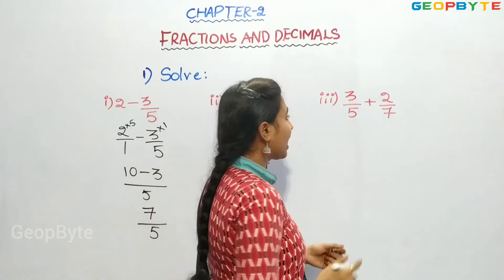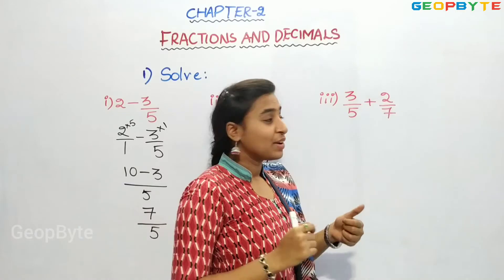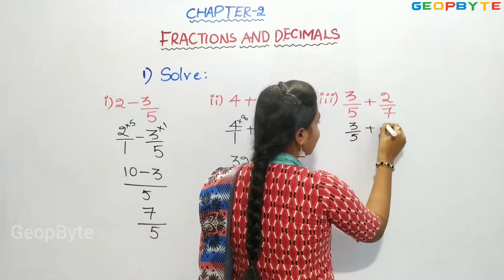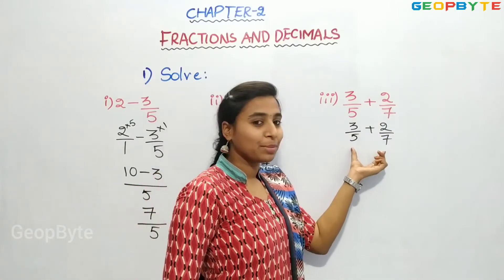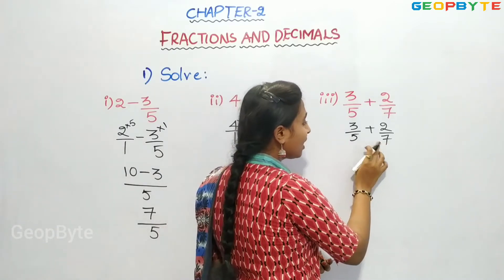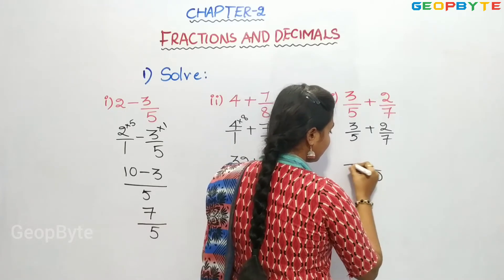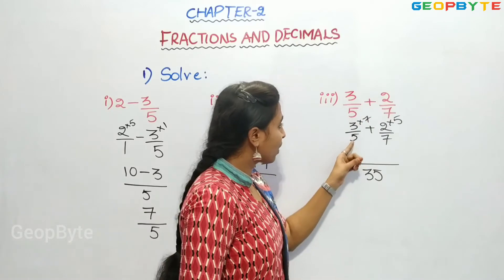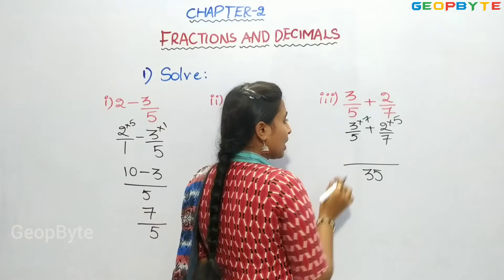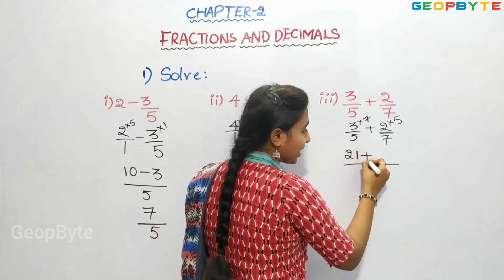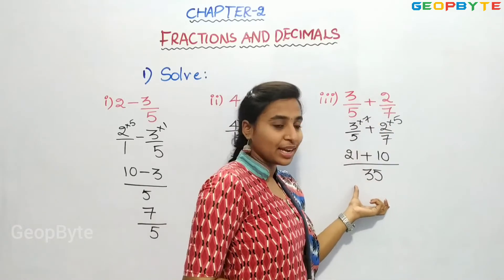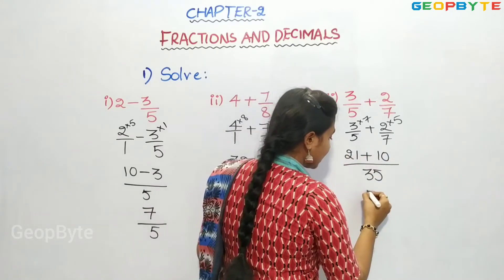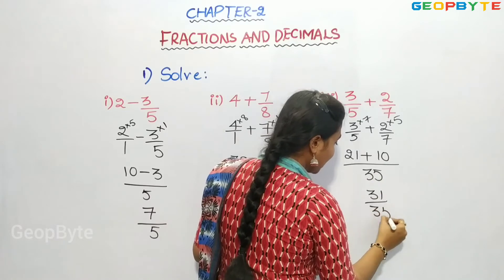Now let us see the third bit: 3 by 5 plus 2 by 7. We have two fractions in addition. To find LCM we multiply denominators: 5 sevens are 35. So LCM is 35. We multiply numerators: 3 sevens are 21 plus 2 fives are 10. So 21 plus 10 is 31 by 35.